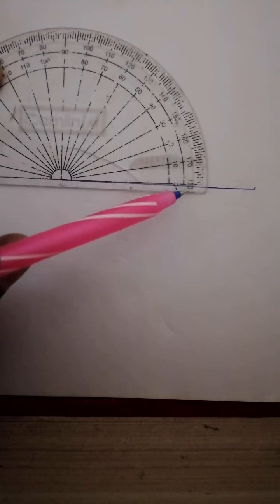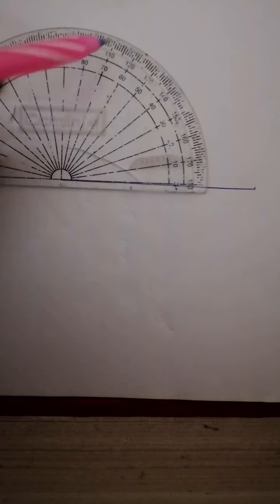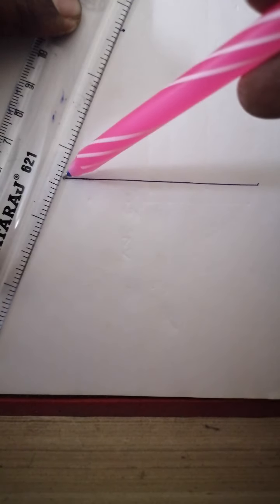You know how to draw 70 degrees. Count from this zero. 70 comes here. Draw 70 degrees. This is 70 degrees.